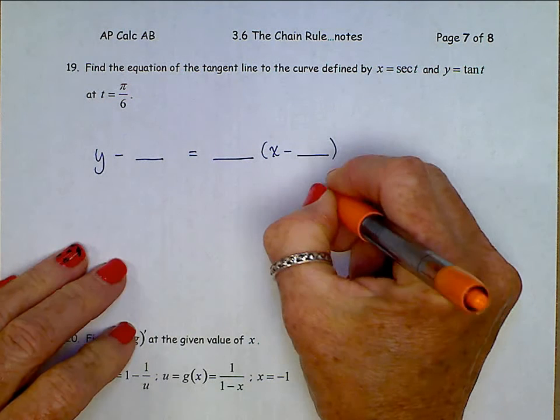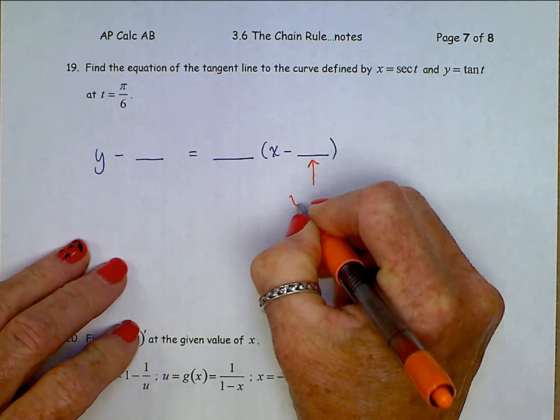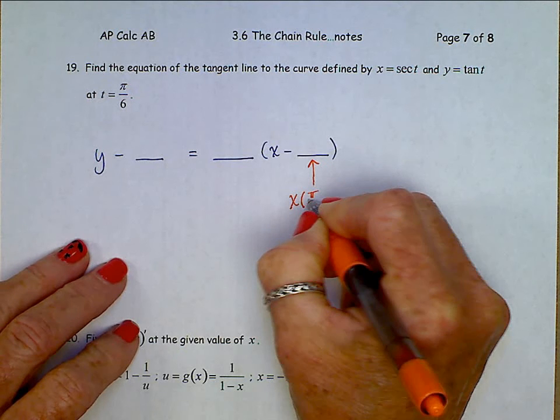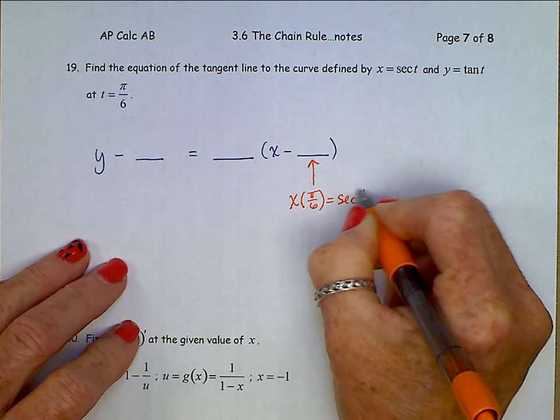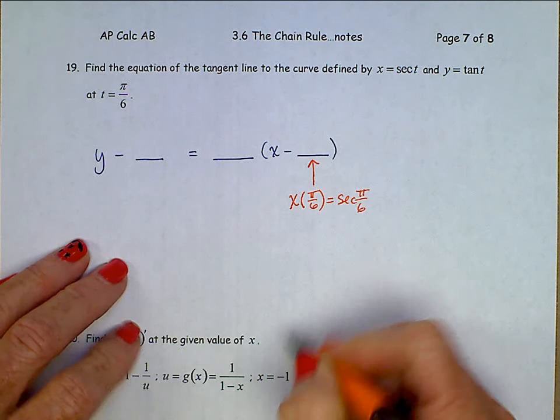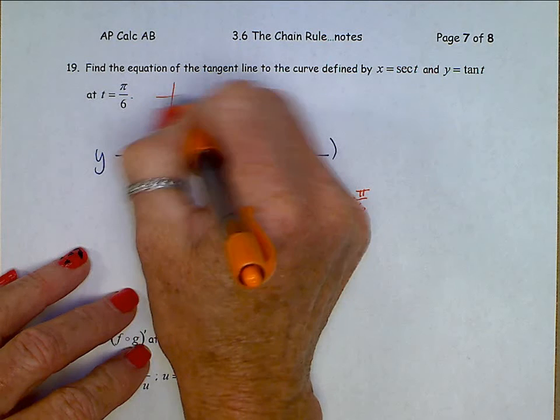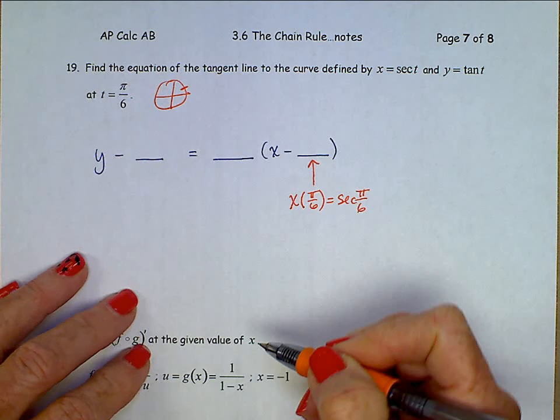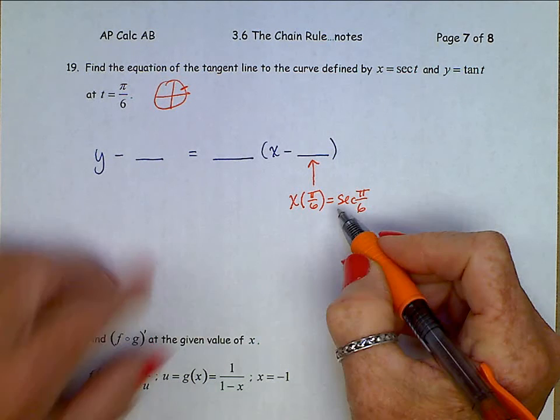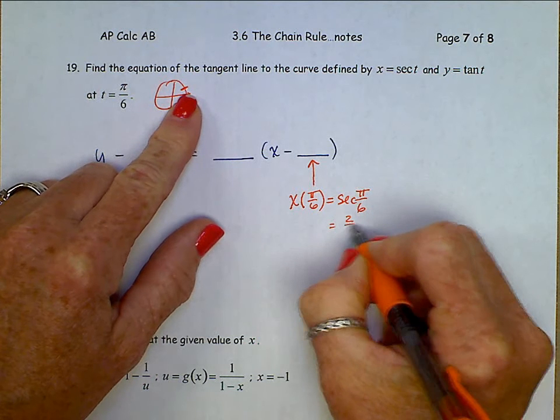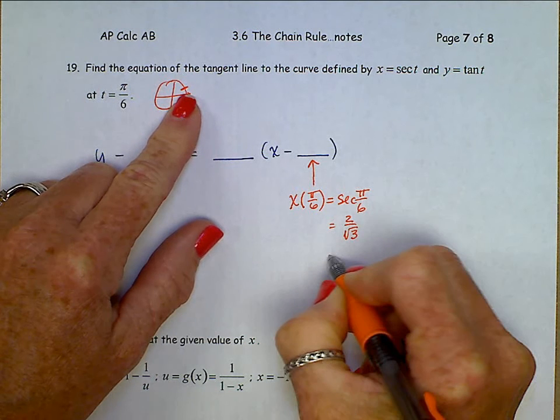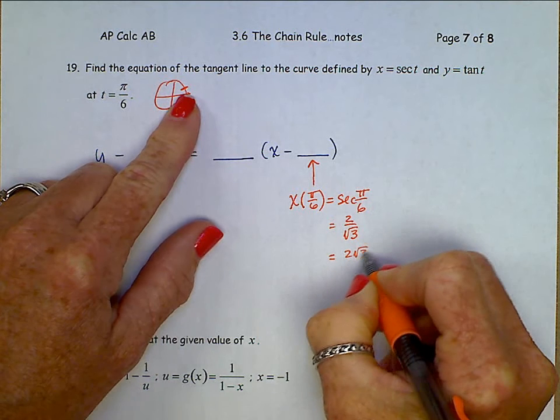Right here is going to be x evaluated at pi over 6, which is the secant of pi over 6. Cosine there is square root 3 over 2, so secant is 2 over square root 3. If we rationalize, it's 2 square root 3 over 3.